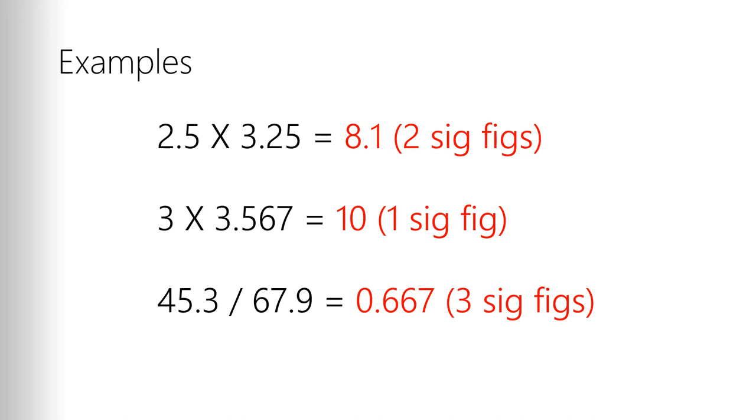Same down here, 45.3 divided by 67.9 gives you 0.667 to three significant figures, because both of those are three significant figures.